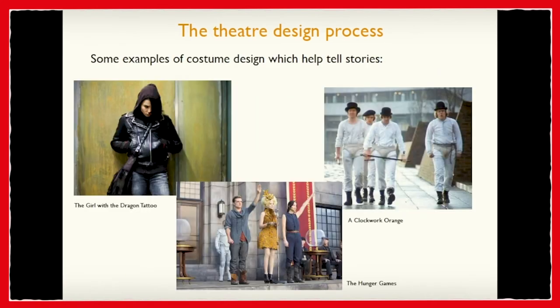I've included a few examples of how costume design has been used to tell stories with three different films. On the left we've got The Girl with the Dragon Tattoo — if you saw a girl like that walking down the street, you would assume things about her: she's dressed in really dark clothes, she's covering herself up, she wants to disappear. And then The Hunger Games — you can see from the costume design how the person in the middle lives a completely different life to the people either side of her: different friends, different interests, different income, different job. The two either side of her — you can tell a lot about their lives just from the colour, texture, fabric, and cut of the clothes.